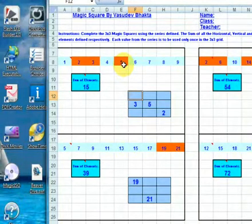The numbers must be placed in the grid such that the sum of the horizontal, vertical and the leading diagonals add up to 15 as shown here as sum of the elements.